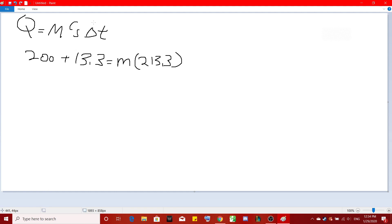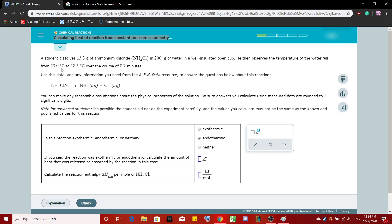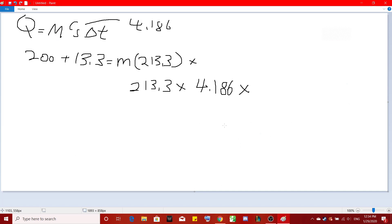And then the specific heat of water is 4.186. So we have 213.3 times 4.186, right? And what is delta T? Delta T is the change in temperature. So 23 to 18.5. That's a difference of 4.5 degrees, right?